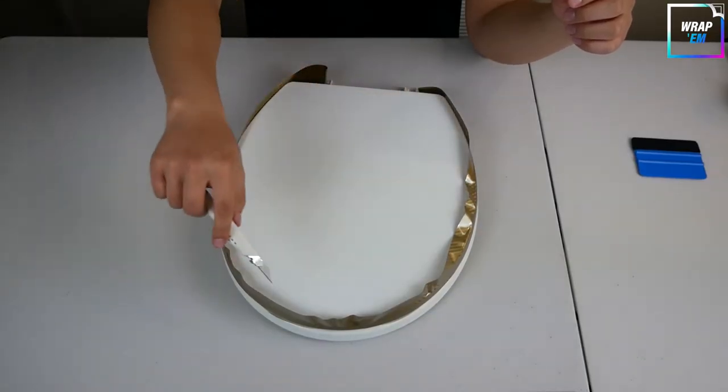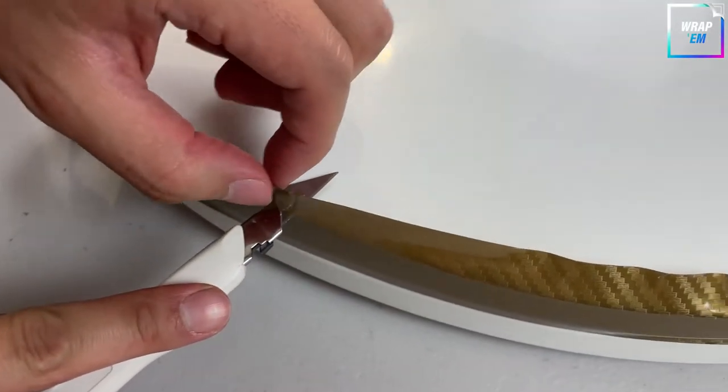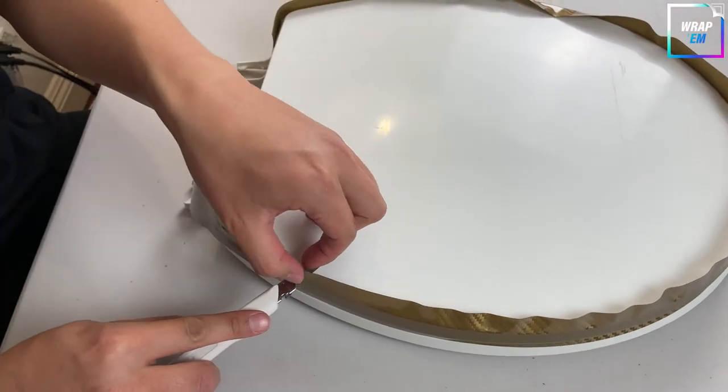Now we are going to trim the excess vinyl. Grab your knife, put the blade flush against the top surface and trim the vinyl along the edge.